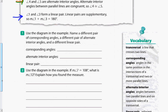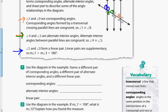Number 1 says: use the diagram to name a different pair of corresponding angles, a different pair of alternate interior angles, and a different pair forming a linear pair. For corresponding angles, let's pick angle 3 — it needs to be in the same spot at a different intersection, so angle 7 works. Angle 11 would also be in the same spot at yet another intersection.